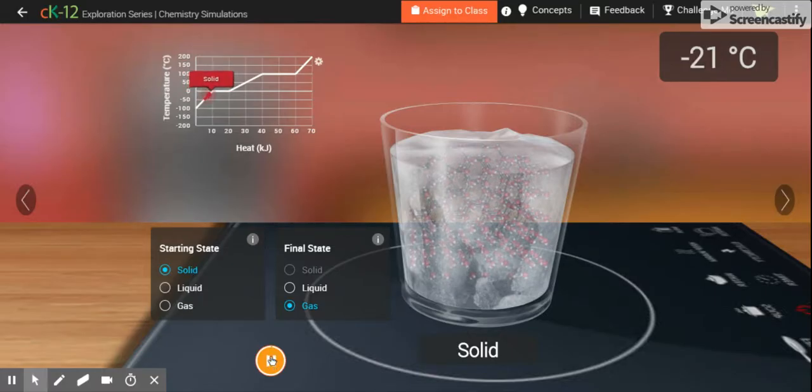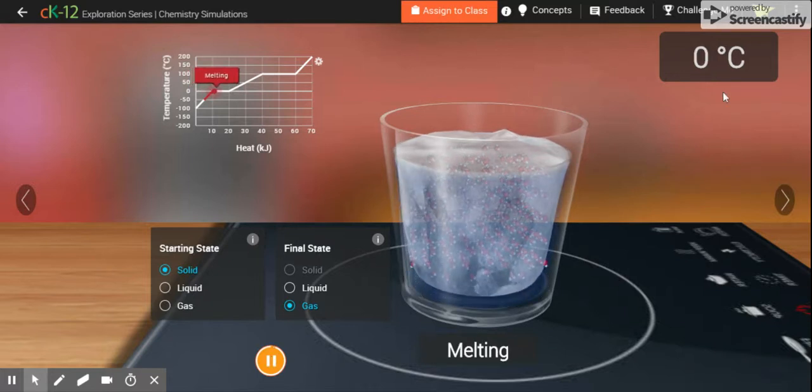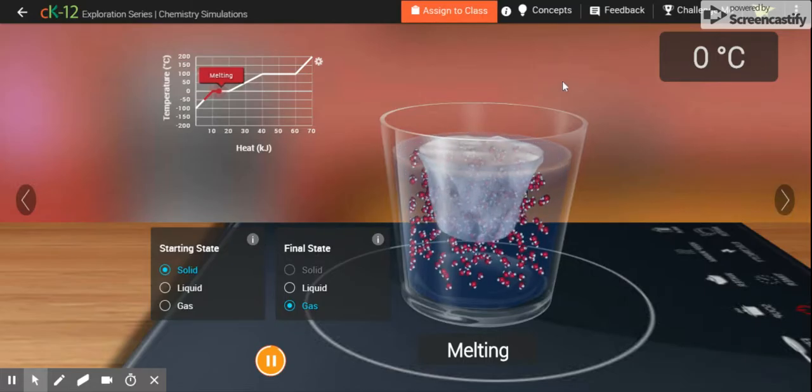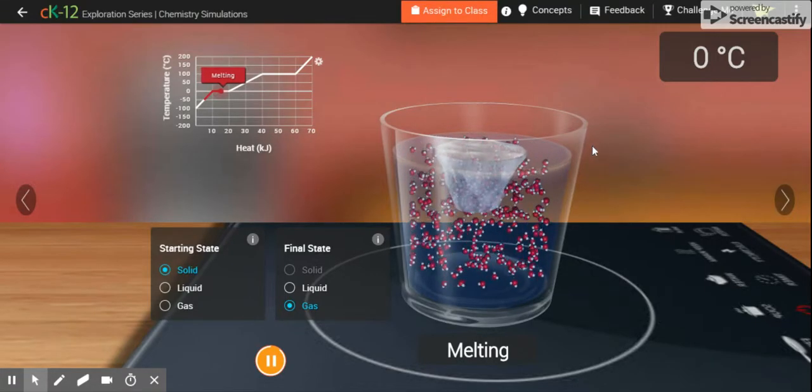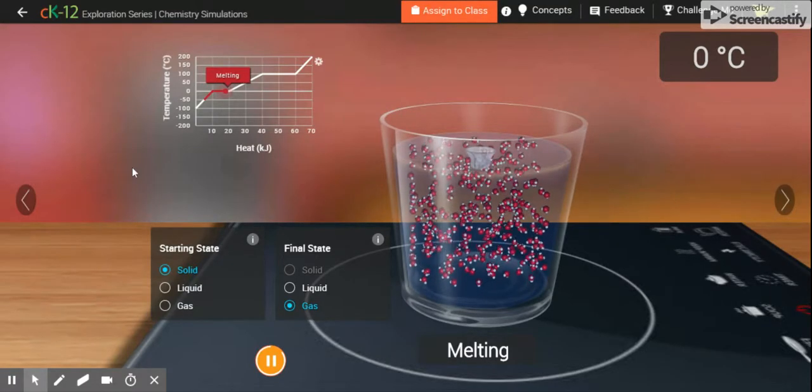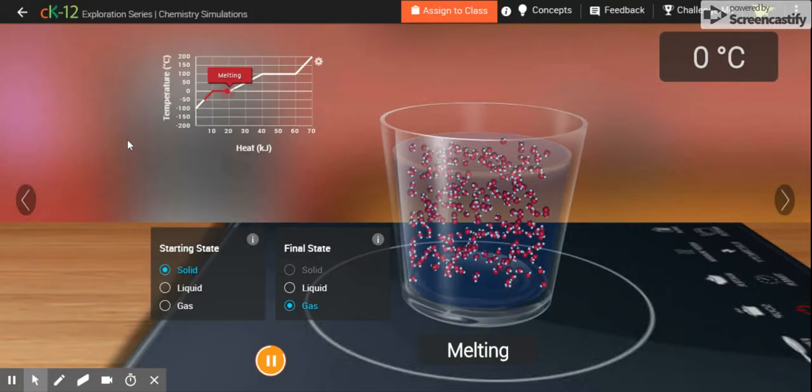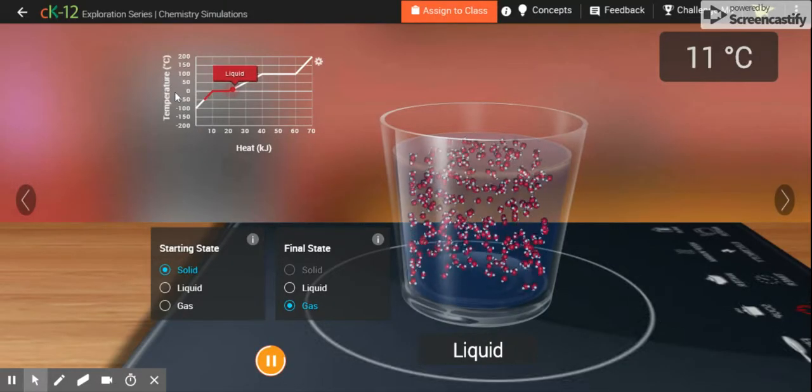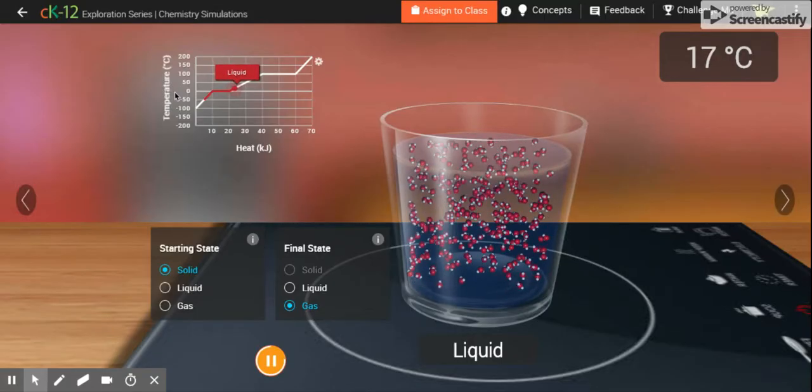All right, so you can see the temperature is already rising, right? We've got our ice starting to melt. The molecules that are in the water as opposed to the ice are moving faster and faster and faster. And as you can see over here on the left hand side of this temperature graph, the temperature of the water leveled out as the ice was melting.